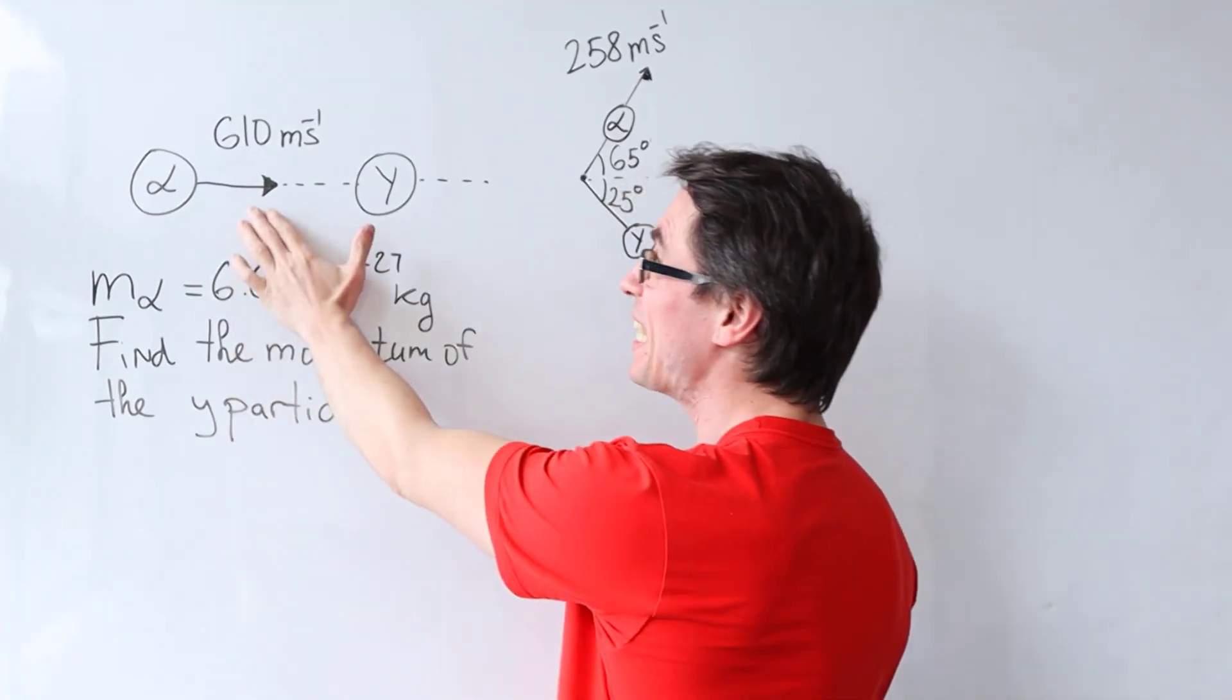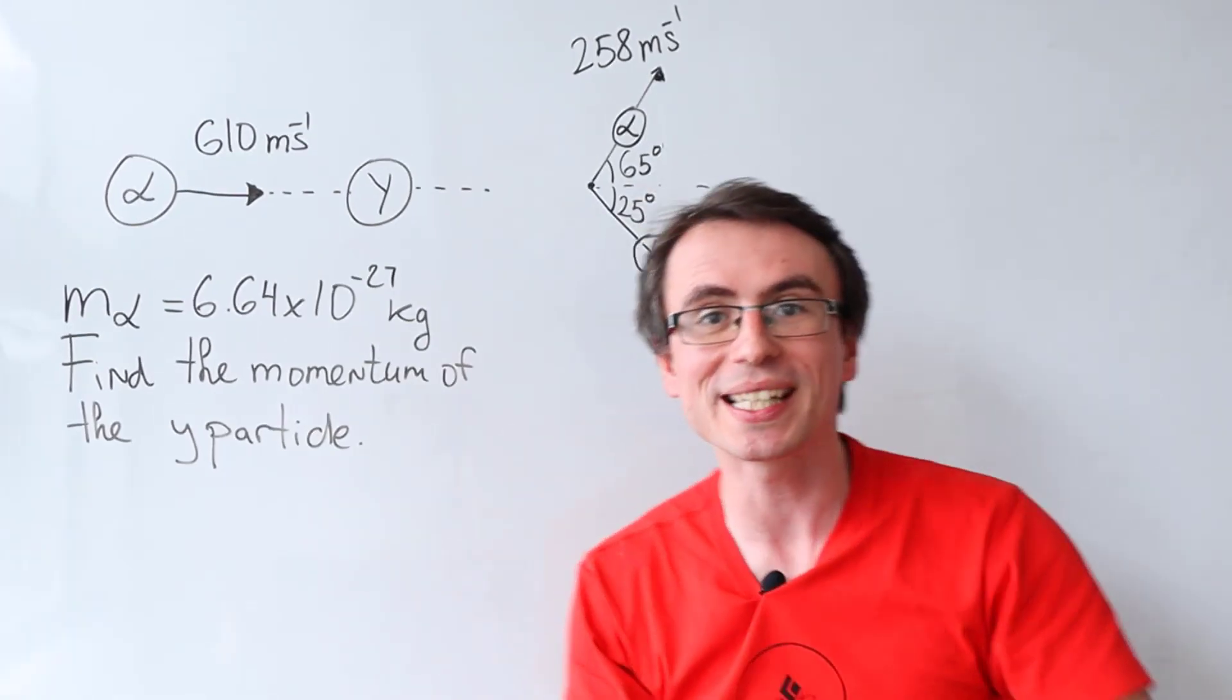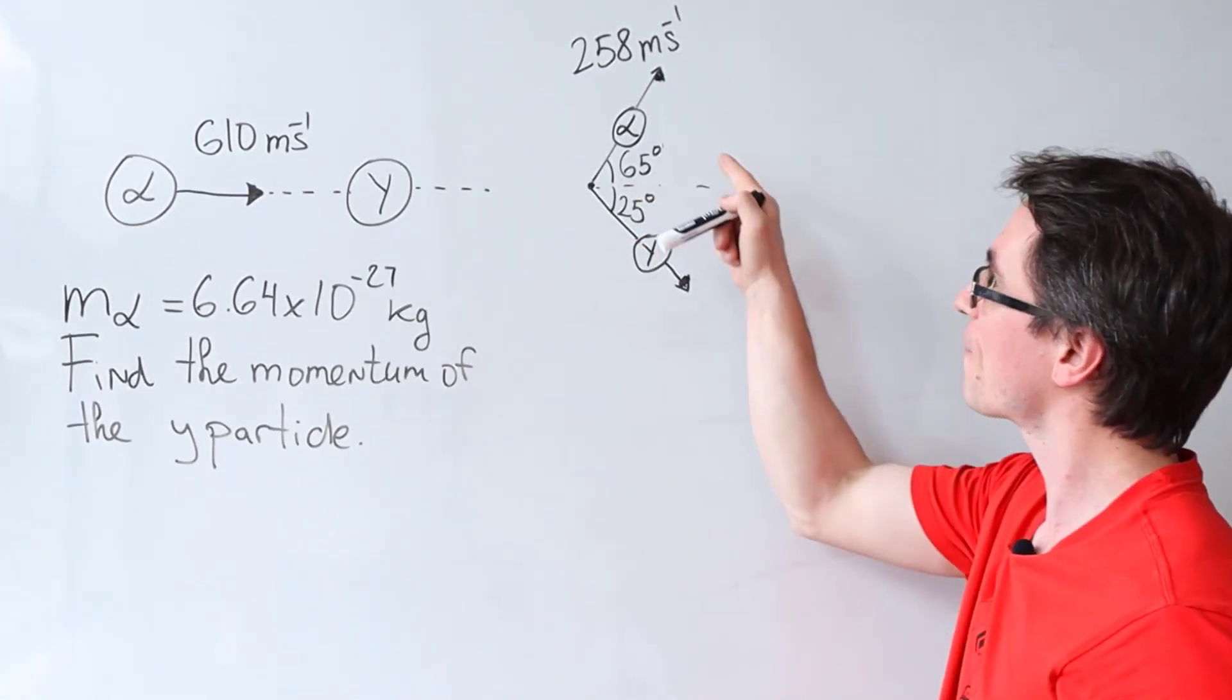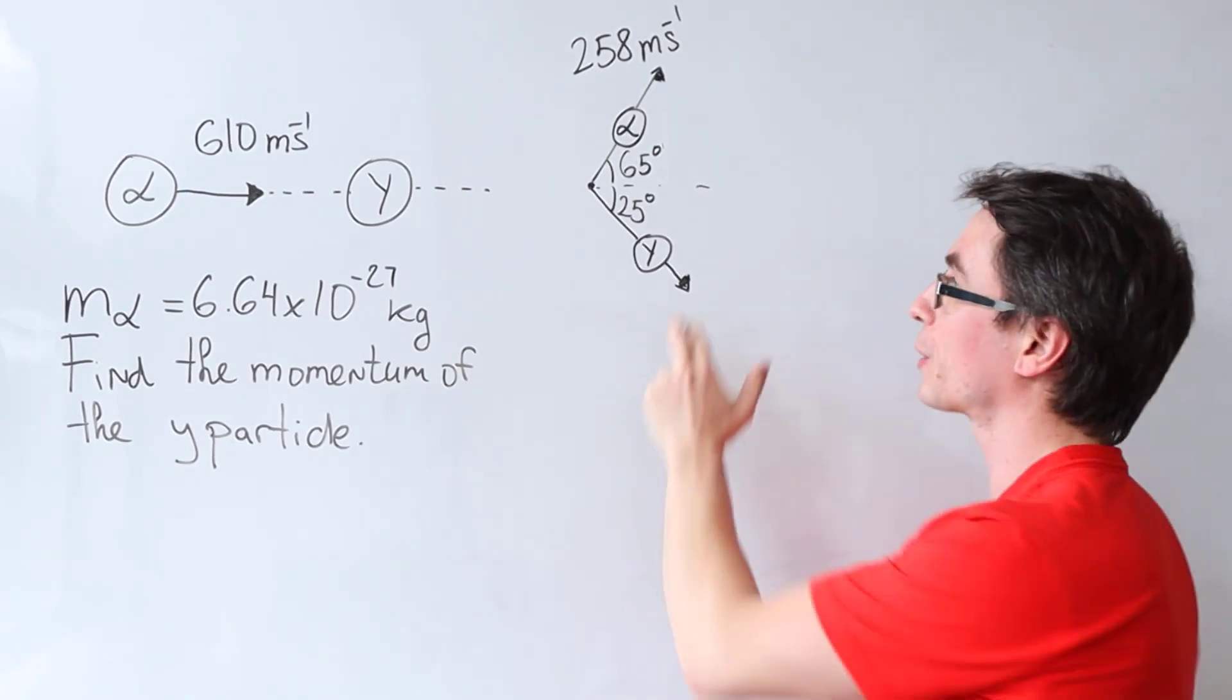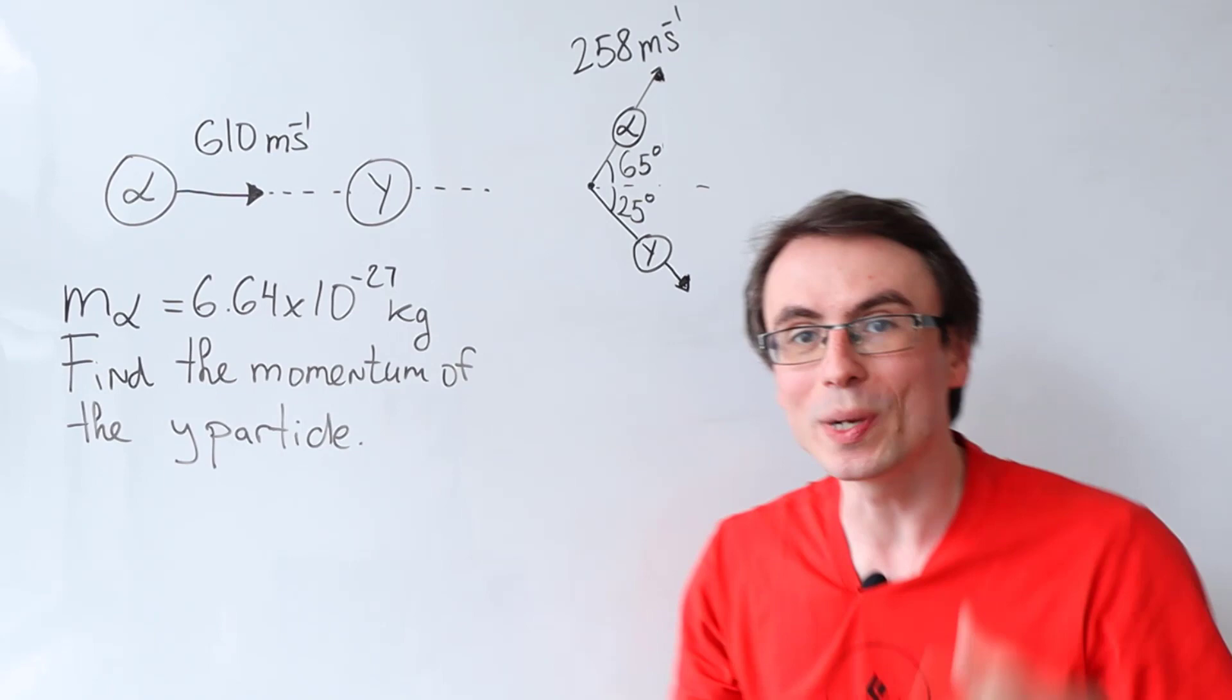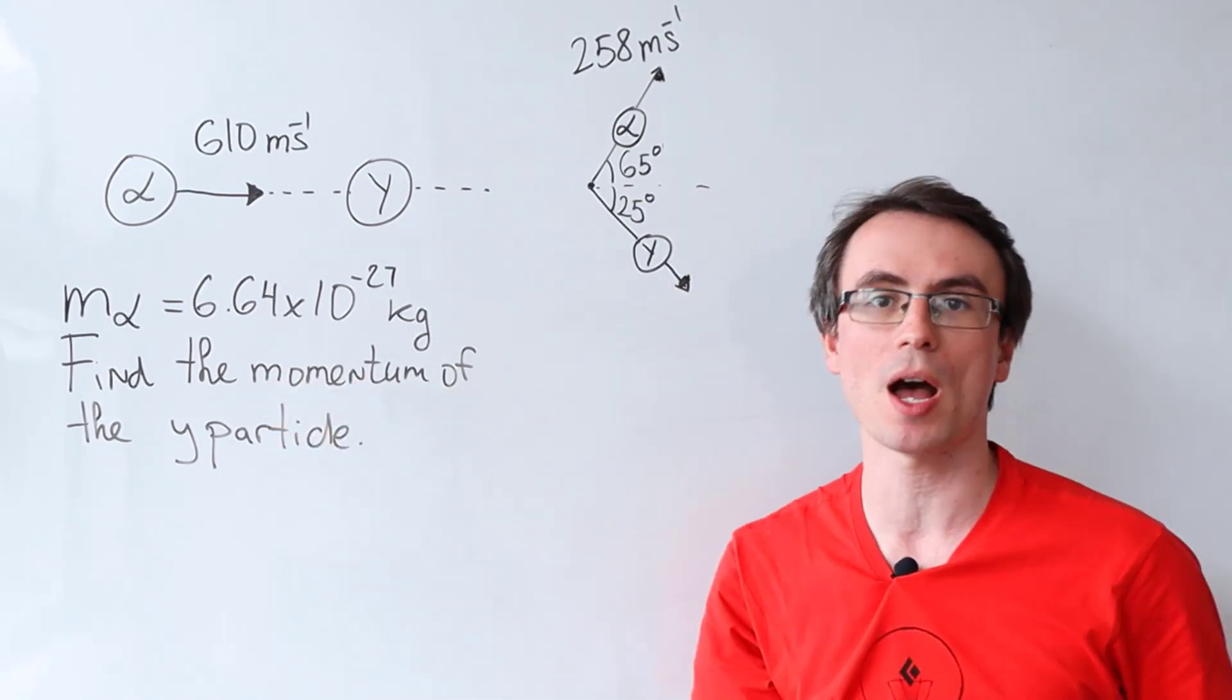We have an alpha particle that is on a collision course with a stationary particle y. After this elastic collision, the alpha particle is scattered at an angle of 65 degrees whereas particle y is scattered at an angle of 25 degrees. We need to find the final momentum of the y particle.